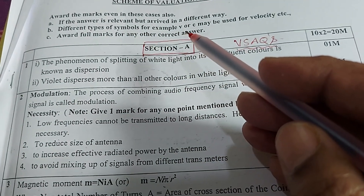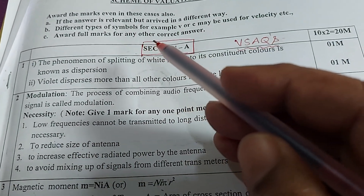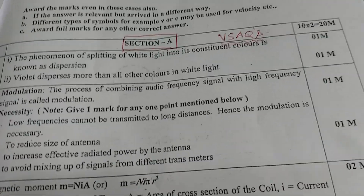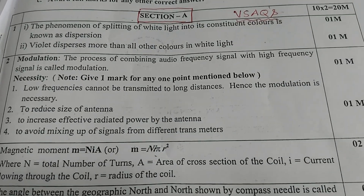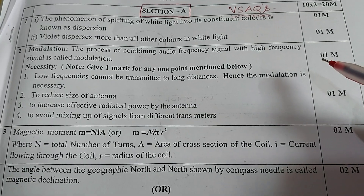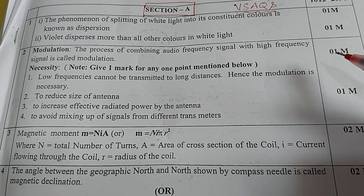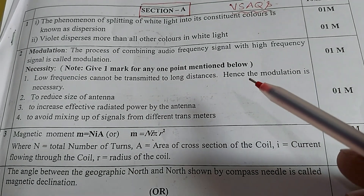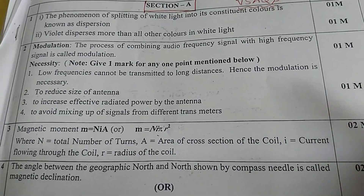Different types of symbols — for example, V or C may be used for velocity, etc. Award full marks for any other correct answer. Multiple answers may be acceptable. For the second answer, modulation: definition carries one mark, and necessity — any one point from the four listed below — carries one mark, making it a two-mark question.